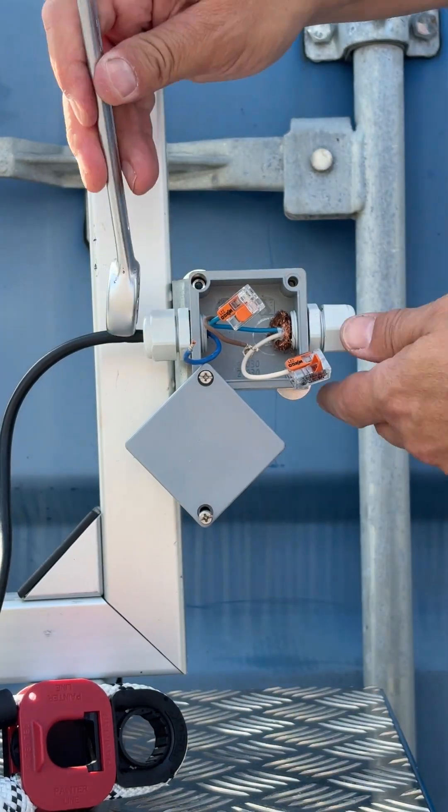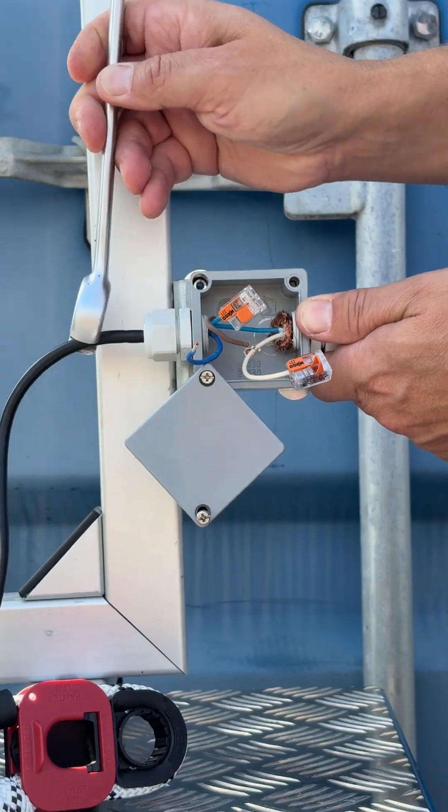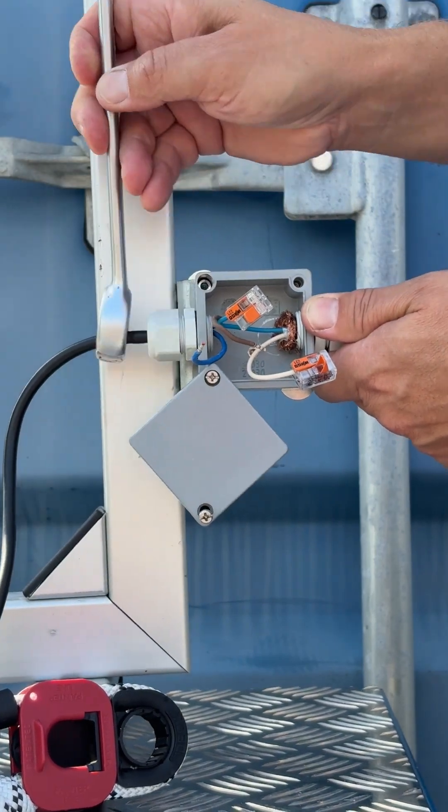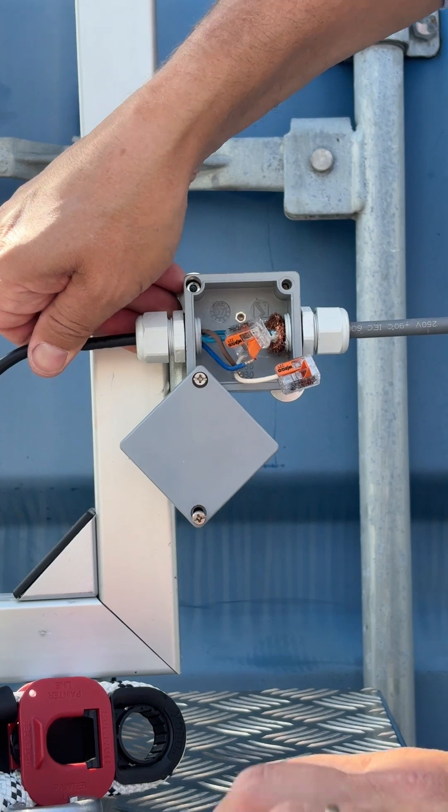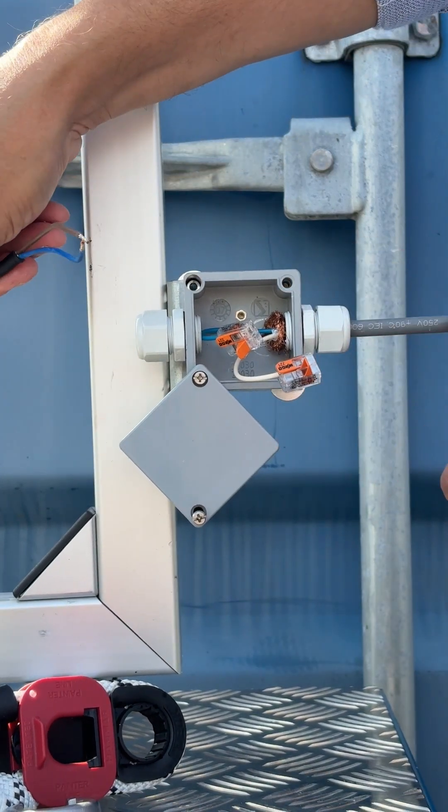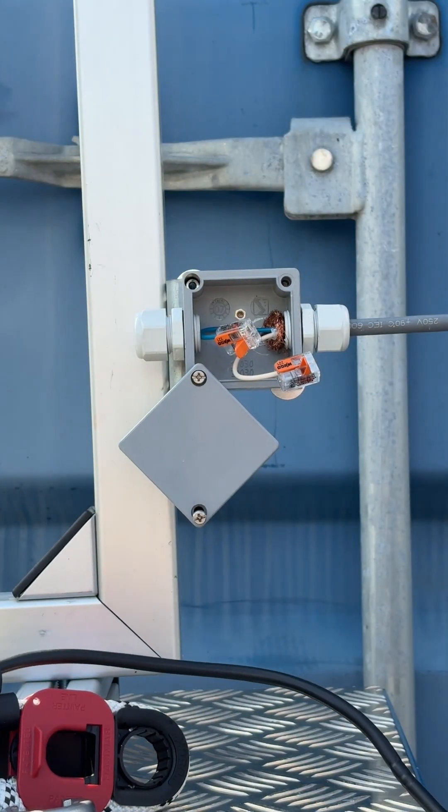Use the spanner to open the cable gland. Pull out the ERU's cable from the gland. Your ERU is now disconnected from the ERS.